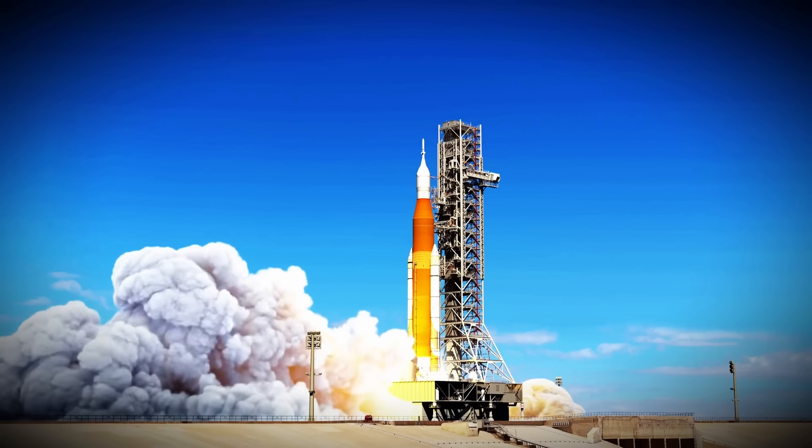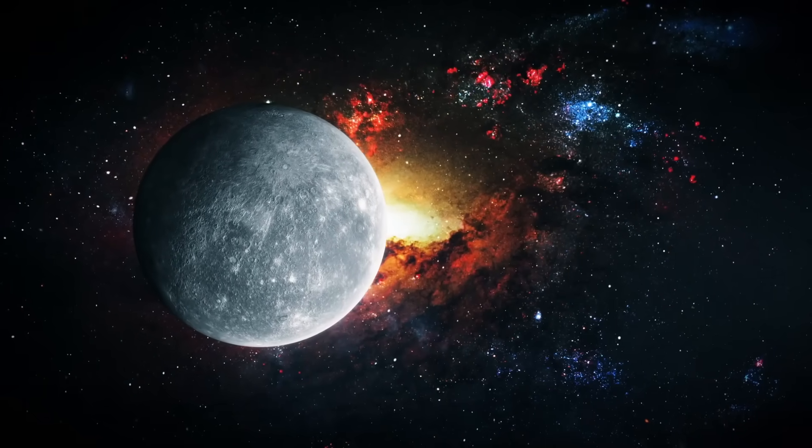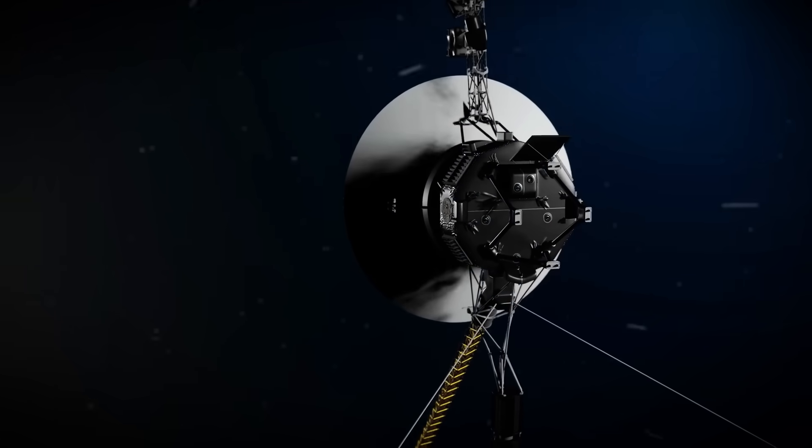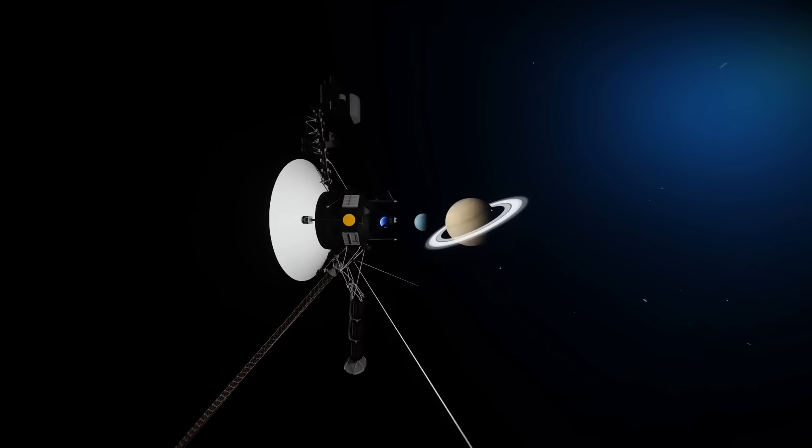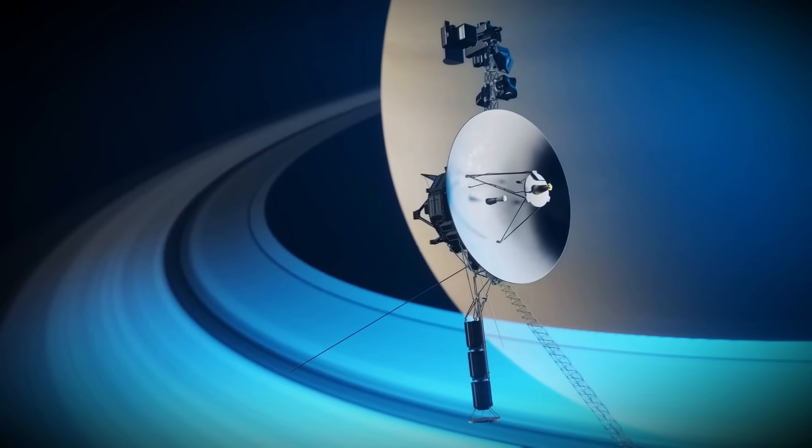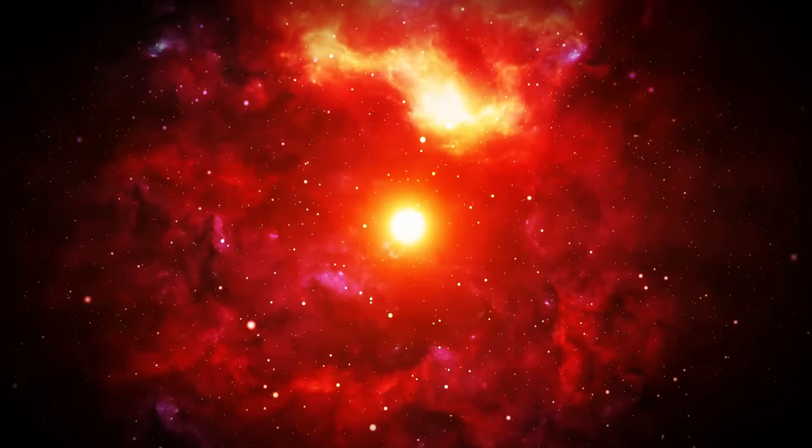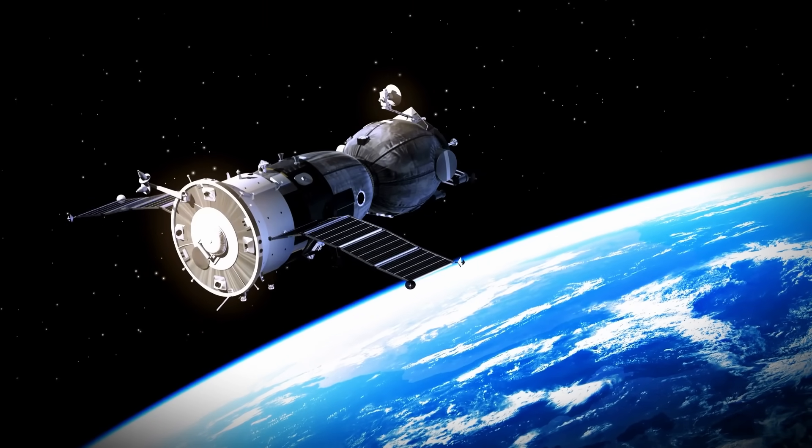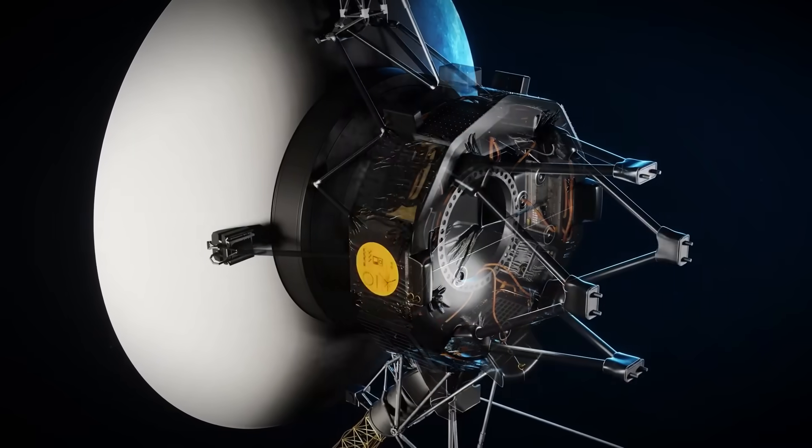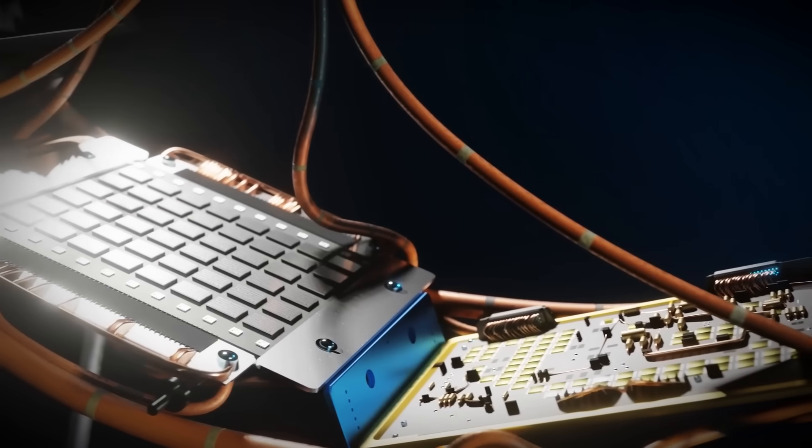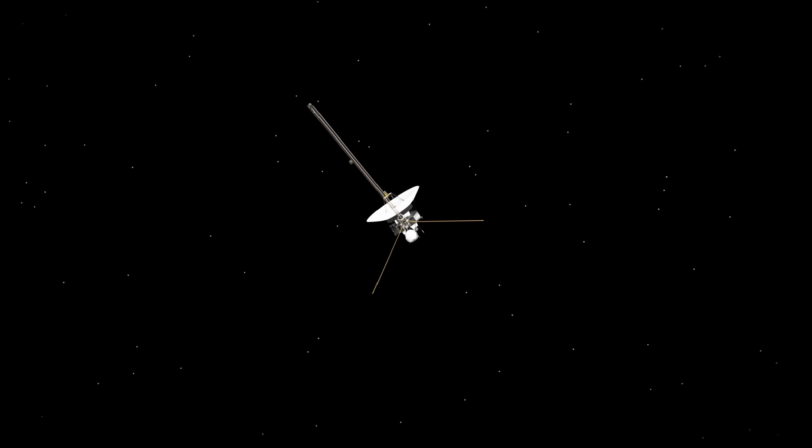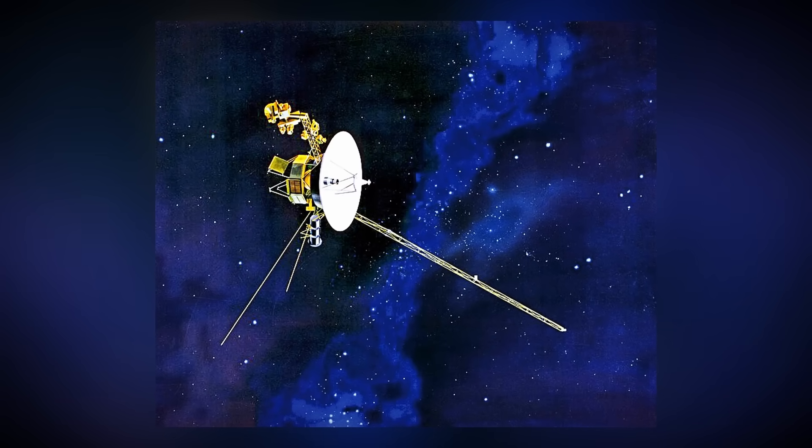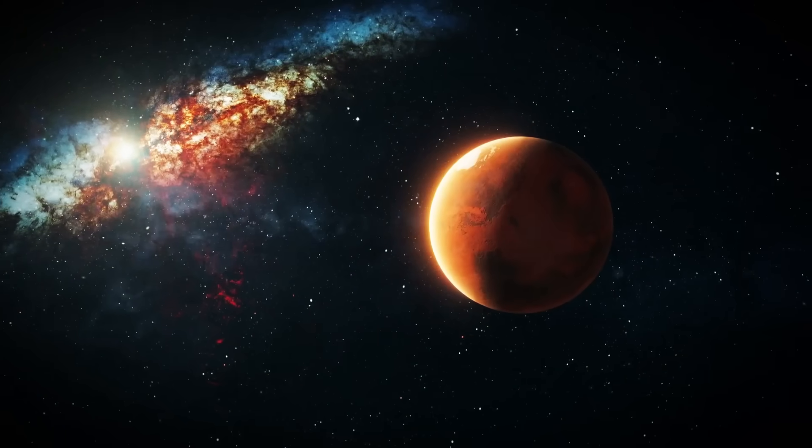NASA launched Voyager 1 and Voyager 2 in 1977 to study the outer planets and beyond. These spacecraft are considered among the most remarkable achievements in space exploration. Despite their nearly identical designs and similar missions, the two spacecraft followed different paths and made unique discoveries. Voyager 2 was launched on August 20, 1977, followed by Voyager 1 on September 5. Although launched later, Voyager 1 reached its planetary objectives before Voyager 2 due to its faster trajectory, which used gravitational slingshots.